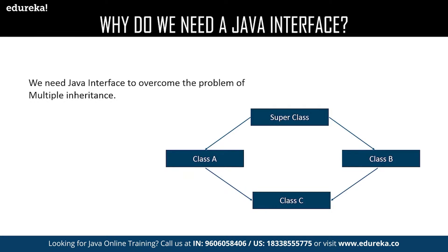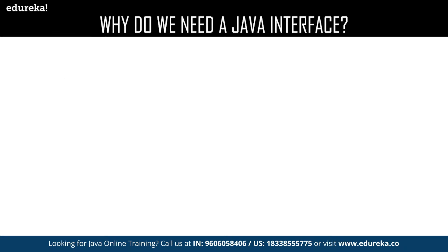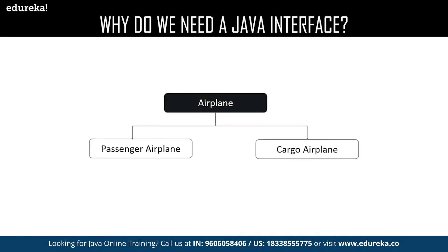That's when the interface comes into the picture. Using interface, we can achieve multiple inheritance — here we are inheriting one class and implementing the behavior of another class. Let me explain with a little example. Let us consider an airplane which requires both the properties of carrying huge cargo and passengers. Let us assume we have two planes: one capable only to carry passengers and the other one capable only to carry cargo.